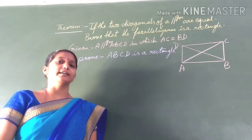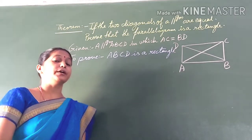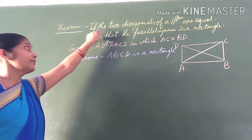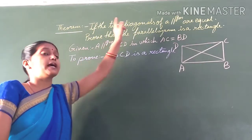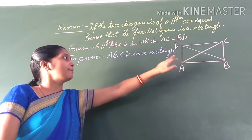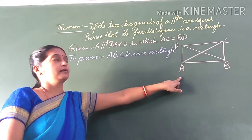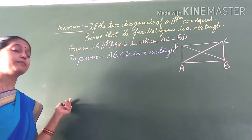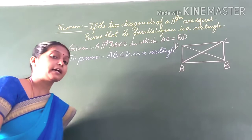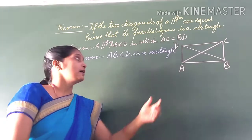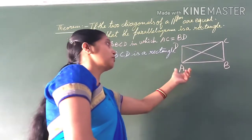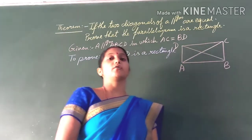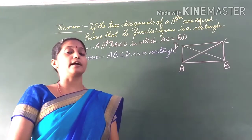Good morning students. Today we have to prove: if the two diagonals of a parallelogram are equal, then the parallelogram is a rectangle. If the two diagonals of a parallelogram are equal, then the parallelogram is what? It is a rectangle.